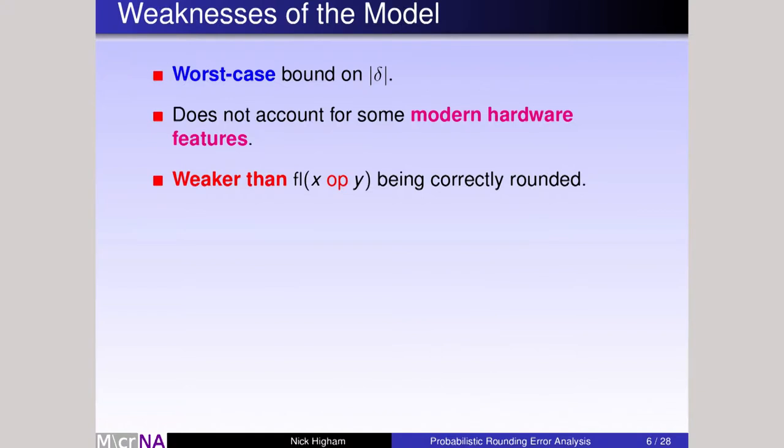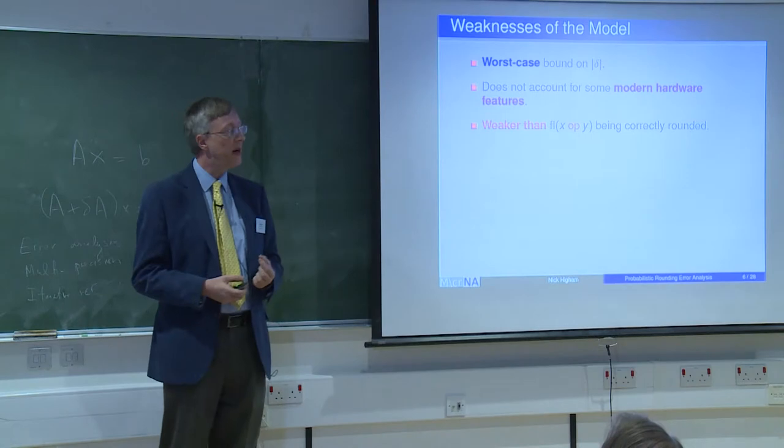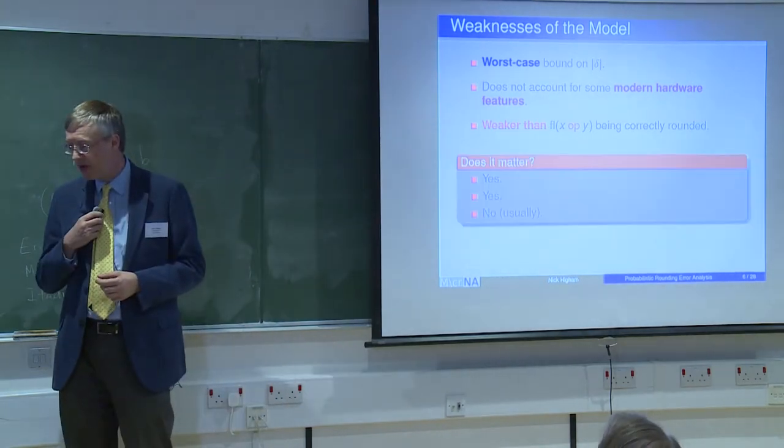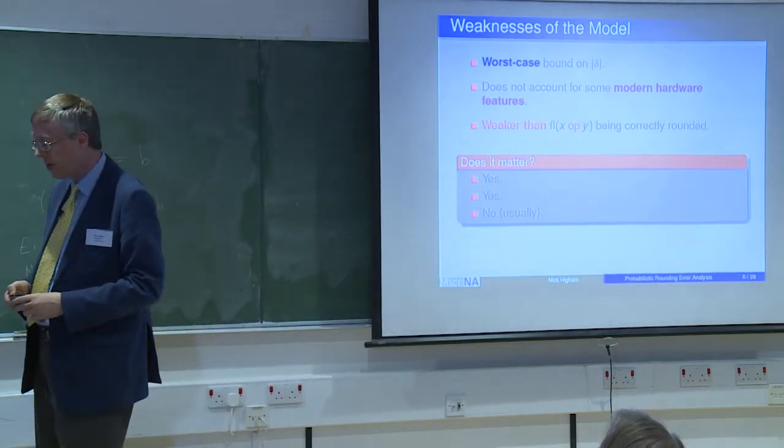Here are three weaknesses of the model. First, it's a worst case bound, so it's not going to be a good predictor of the average case behavior. That model doesn't take account of modern hardware. There are features in modern hardware that just aren't captured by that model. And thirdly, that model is actually weaker than what the IEEE standard says. The IEEE standard says you have to take the correctly rounded result, and that model is weaker. Do these three things matter? I think the first two do. The last one less, and perhaps not at all. I'll begin with the third one, the rounding being stronger than what the model shows us.